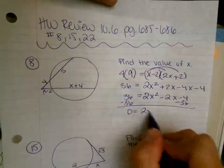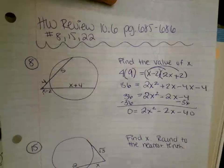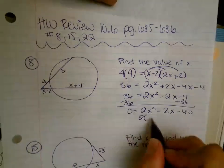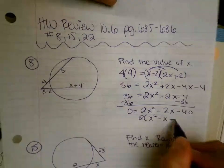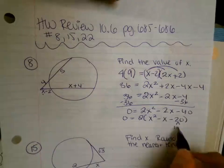0 equals 2x squared minus 2x minus 40. 2 is divisible everywhere here, so I'm going to pull a 2 out. So I'm going to have 2 times x squared minus x minus 20 equals 0. And then I'm going to factor 1 times 20, 2 times 10, 4 times 5 all equals 20.